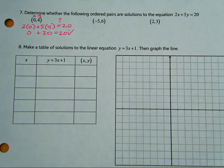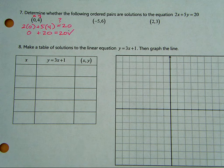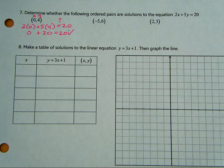Yes, so that means with this line, this 2x plus 5y equals 20 is a line. That point is on the line. That came out true. It's a solution. All right, let's do one more. Let's do the negative 5, 6.